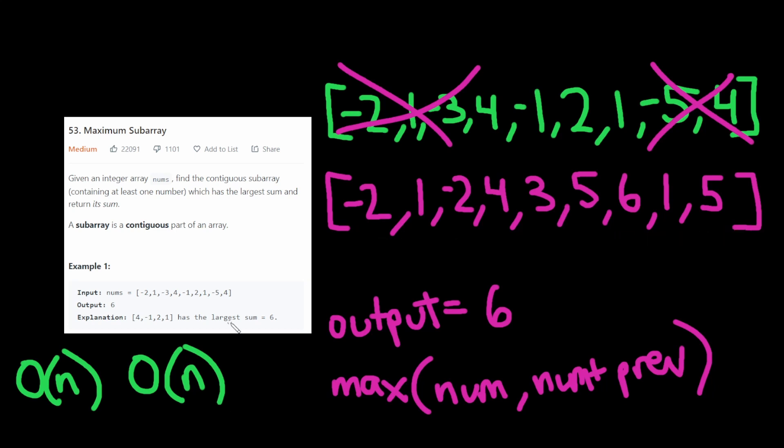Although technically you could do it in O(1) if you just update nums the original array as you go instead of storing an extra variable. Personally I don't like to do that because you're modifying the parameter and that's generally not good programming practice.